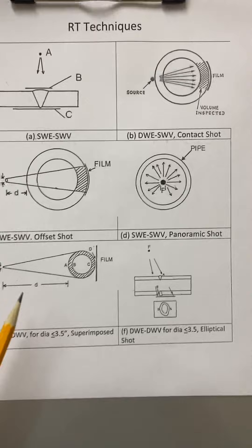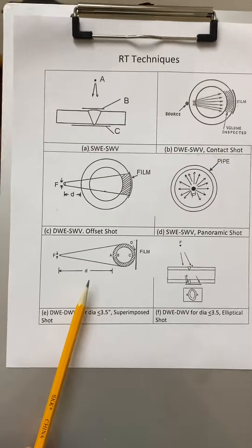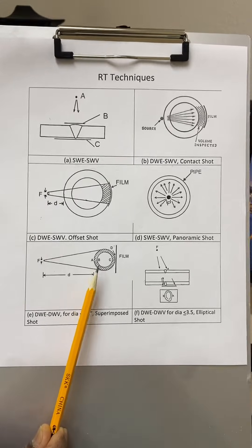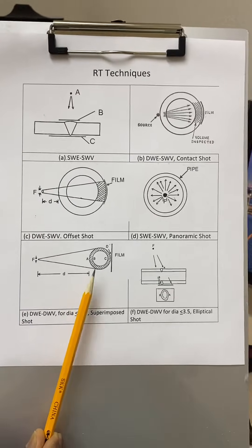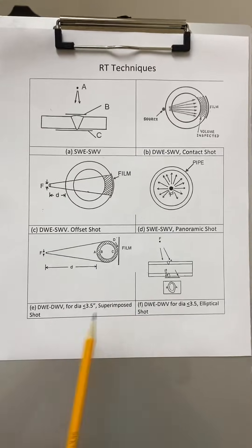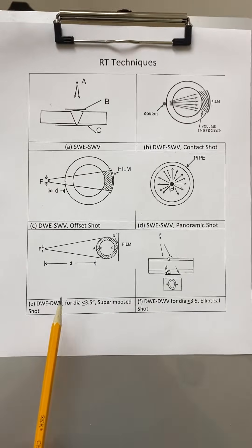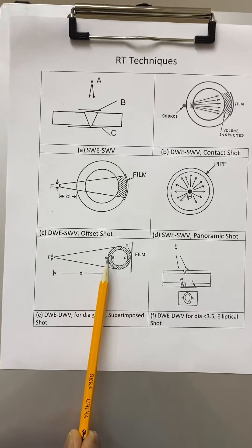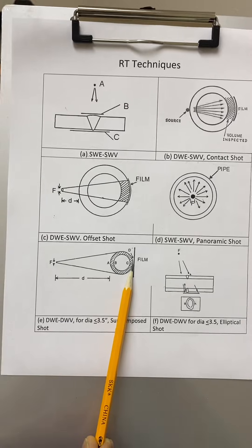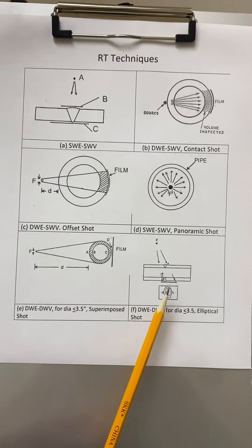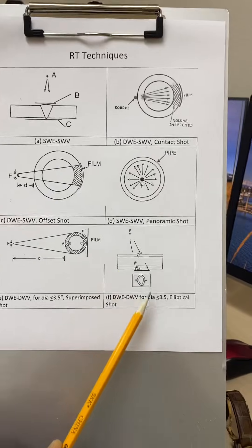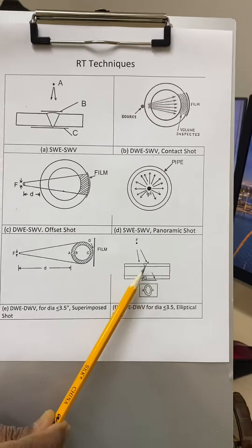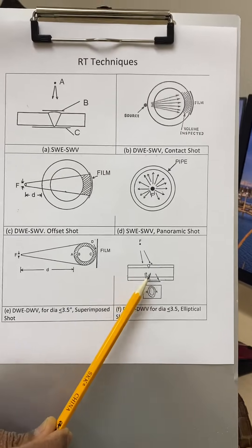The last two techniques are double wall exposure double wall viewing, because the radiation goes through two walls and we are also viewing two walls. The difference between them is that one is called superimposed, where the weld on one side is superimposed on the weld on the opposite side, and the other is called an elliptical shot, where you get an elliptical image so you can determine whether a defect is on the top weld or the bottom weld.